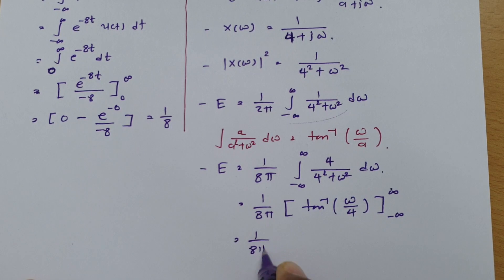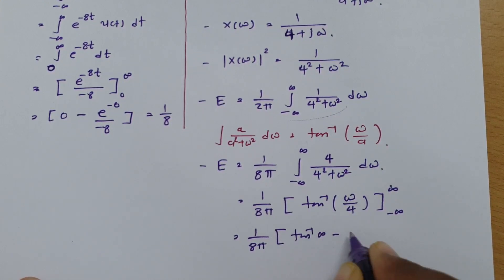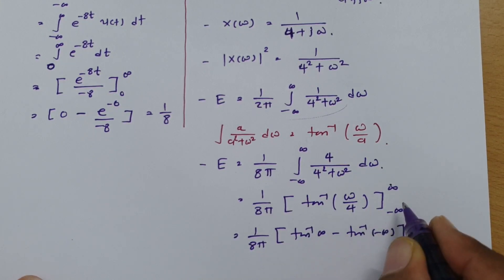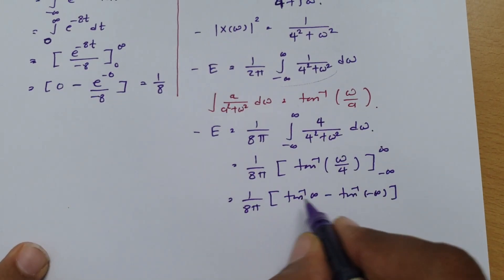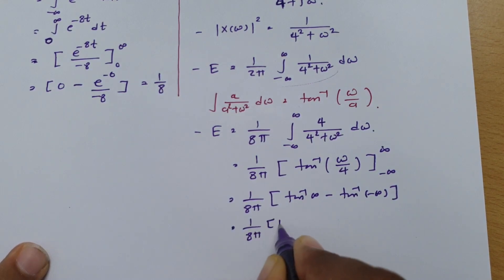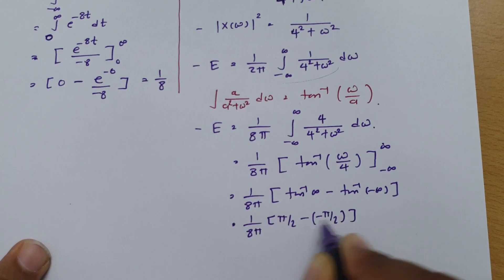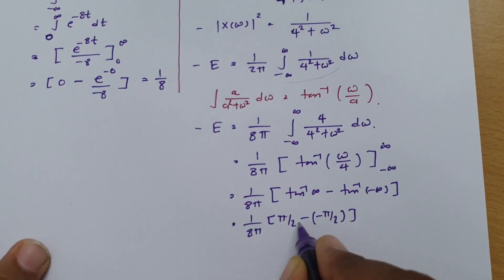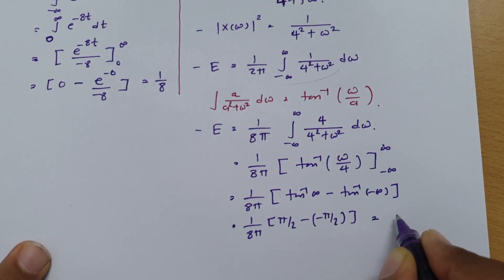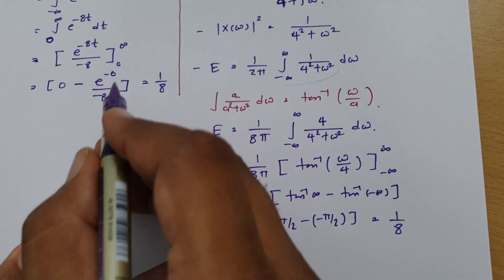Placing the limits: tan⁻¹(∞) = π/2 and tan⁻¹(-∞) = -π/2. So the result is π/2 - (-π/2) = π. Therefore energy = (1/8π) × π, and the π cancels, giving energy = 1/8. Both answers are the same, so we have successfully verified the energy calculation using Parseval's theorem.